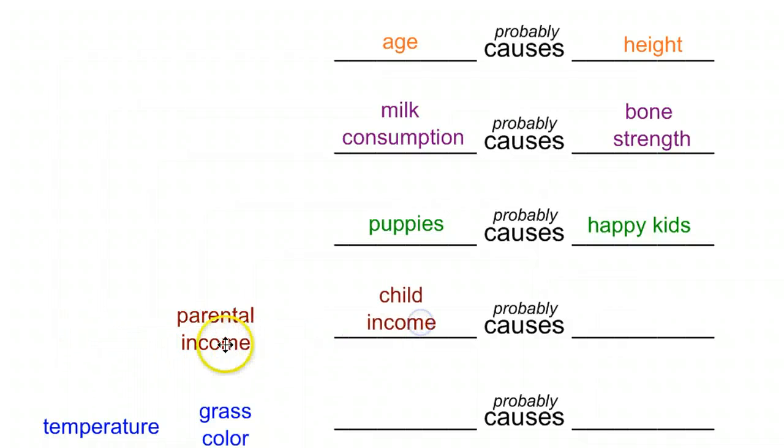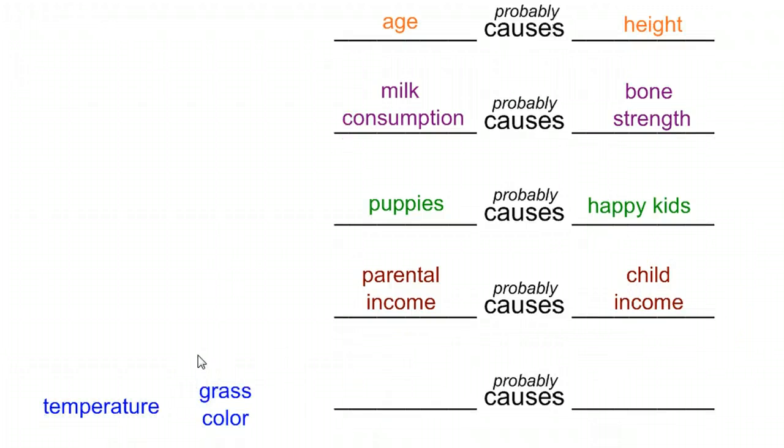Next one, child income and parental income. Does the child's income predict how much the parents will make, or does the parent's income predict how much the child will someday make? Usually, whenever you're dealing with something where one thing comes first, in the case of parents versus children, the parent came first, therefore it probably is the cause of the thing that came later, the child. So how much money a parent makes can help predict why a child might make more or less money.